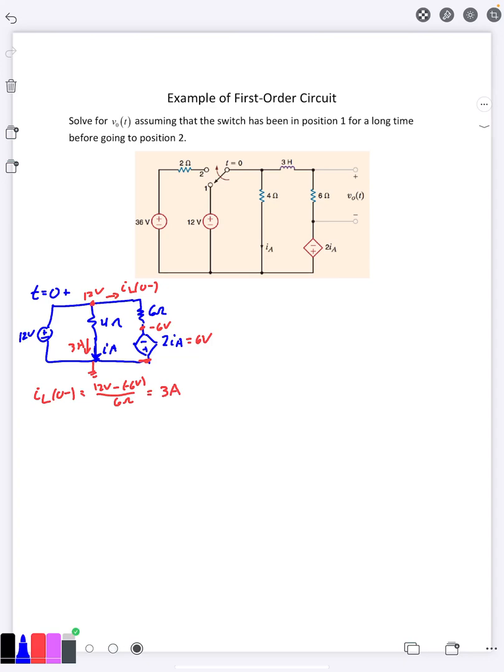So that means our initial current through the inductor is 3 amps. I just realized this was all at T equals zero minus, right, this is right before the switch happened. Now we're going to go to right at the switch happens, T equals zero plus.